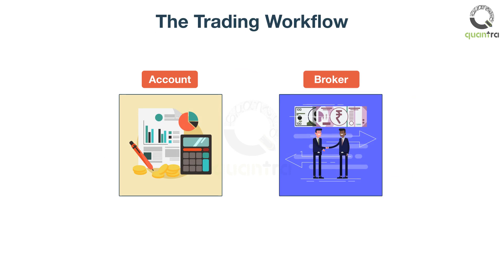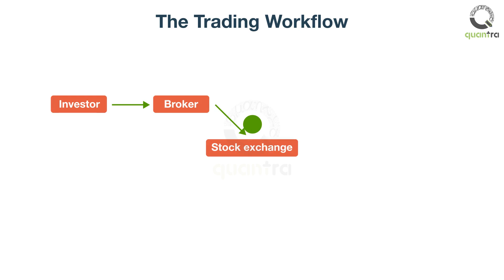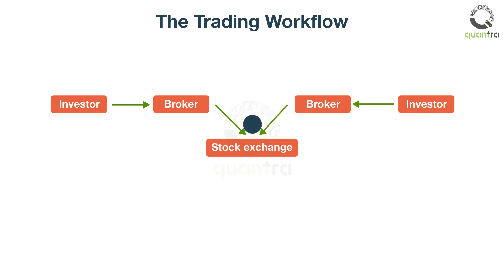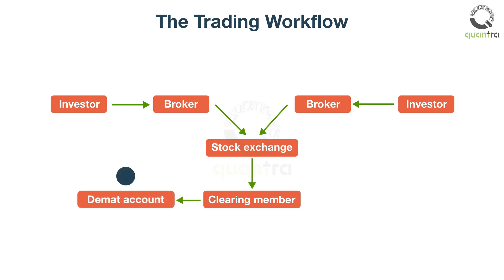Once you have an account opened, you can begin your trading journey. A typical trading workflow begins when you as an investor place an order to buy stocks with the broker, who then forwards the order to the stock exchange. Your order to buy shares would be matched with other investors who are willing to sell the exact quantity of shares on the exchange — this is known as the execution of the order. Thereafter, a clearing member of the stock exchange will settle the transaction.